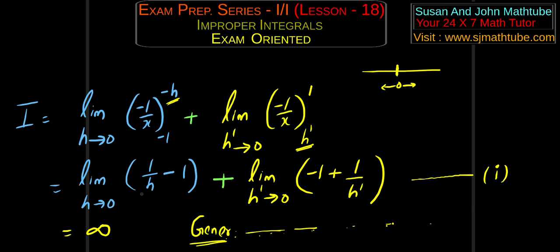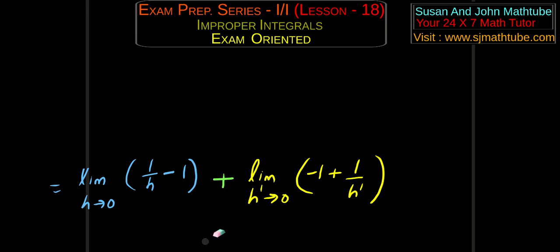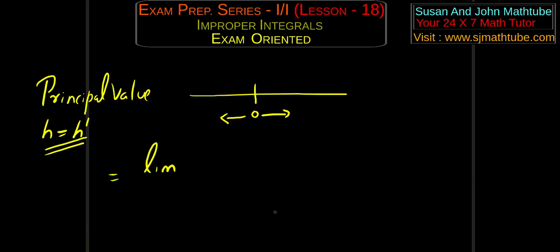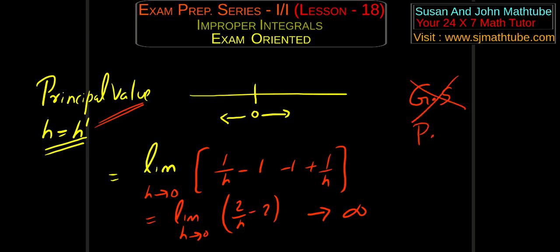And you will get: limit h tends to 0, this limit will come common. So I will write limit h tends to 0: 1 by h minus 1, and then minus 1 plus 1 by h. So limit h tends to 0: 2 by h minus 2. That is again infinity. So even the principal value does not exist. The general solution does not exist, the principal solution does not exist — so basically the integral is always divergent.